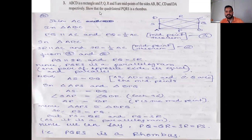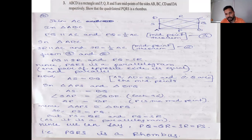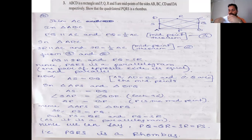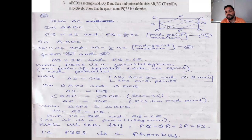Question 3: ABCD is a rectangle and PQRS are the midpoints of sides AB, BC, CD and DA respectively. Show that quadrilateral PQRS is a rhombus. We can show PQRS is a parallelogram using the midpoint theorem, just as in questions 1 and 2. To show it is a rhombus, we must show all sides are equal.